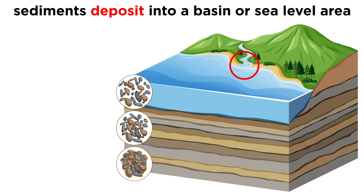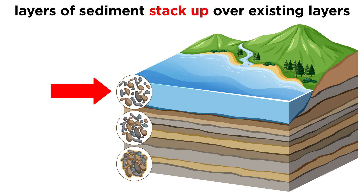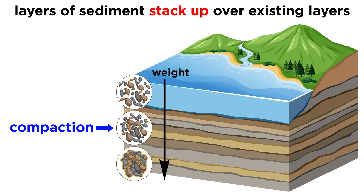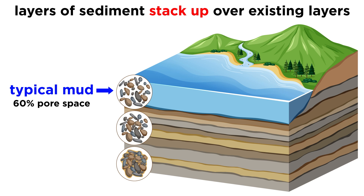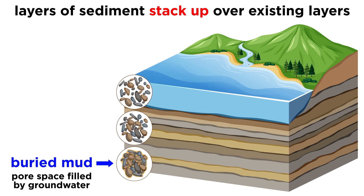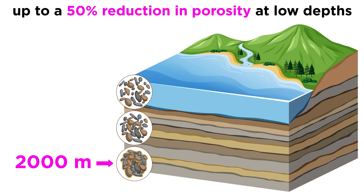The chemical and physical changes that occur during and after the burial of a body of sediment is called diagenesis. Sediment is deposited in basins, or low-lying areas that are typically near sea level. As successive layers of sediment stack up, their weight acts to compact the underlying sediment. In a typical mud, there can be more than 60% pore space — that is to say, 60% of the volume of this mud is empty space. In sediment buried in a basin, the pore space will almost exclusively be filled with groundwater. The deeper a sediment is buried, the more it will compact, with a 50% reduction in porosity occurring by a depth of about 2,000 meters.